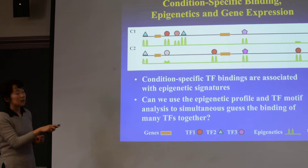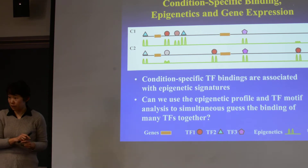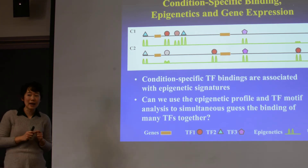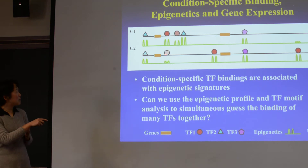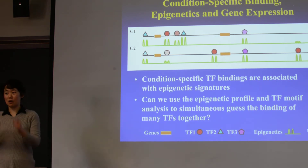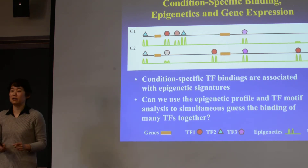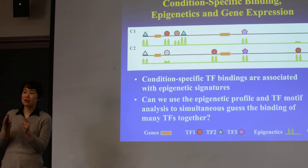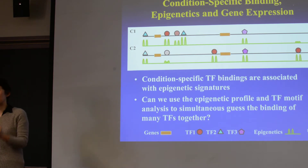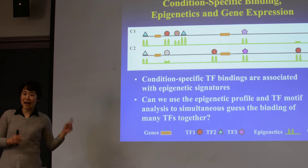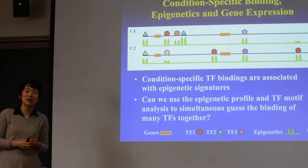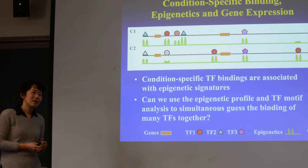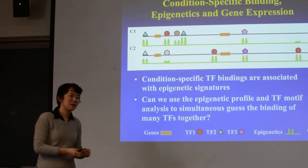In the different conditions, you can see the signals are different. So how is that useful? Because all of these transcription factors bind to the DNA with a motif. If you know where things are happening, you can use motif analysis afterwards to guess what transcription factors are binding in that location.